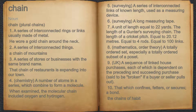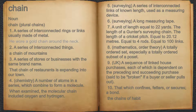Chain. Noun. 1. A series of interconnected rings or links, usually made of metal. For example, he wore a gold chain around his neck.